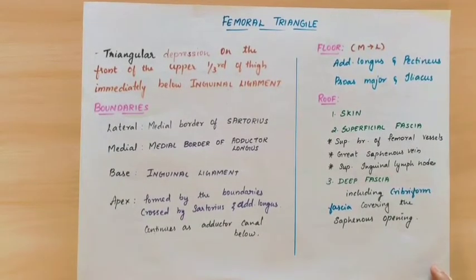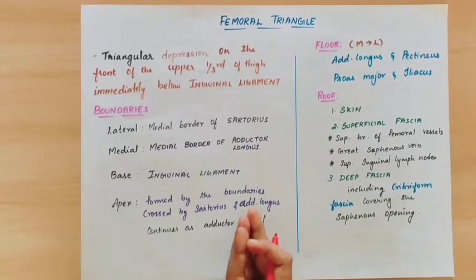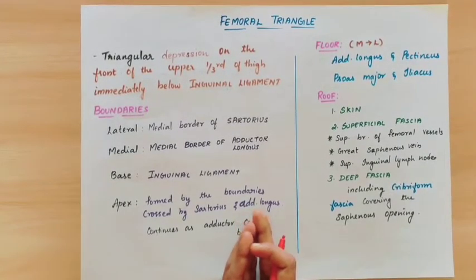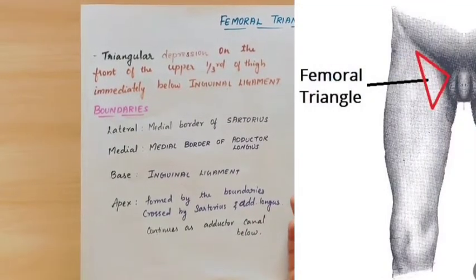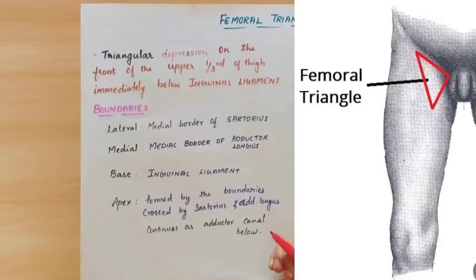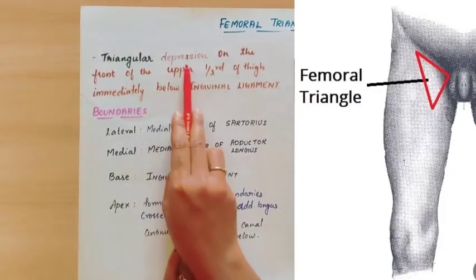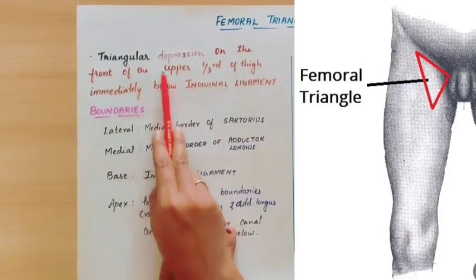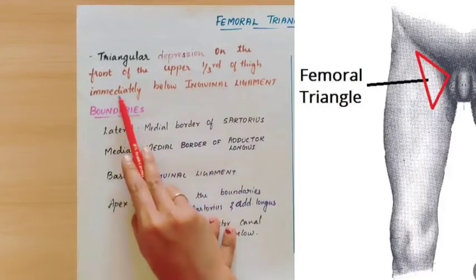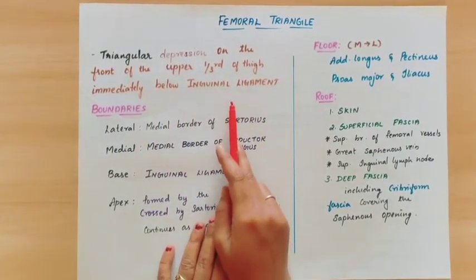Hello and welcome back to my channel. In this video, we will see the femoral triangle. Femoral triangle is one of the most important 5 mark questions. Femoral triangle is a triangular depression that you can see in the front of the thigh, in the upper one-third, immediately below the inguinal ligament. That is why we say femoral triangle — a triangular depression on the front of the upper one-third of the thigh, immediately below the inguinal ligament.